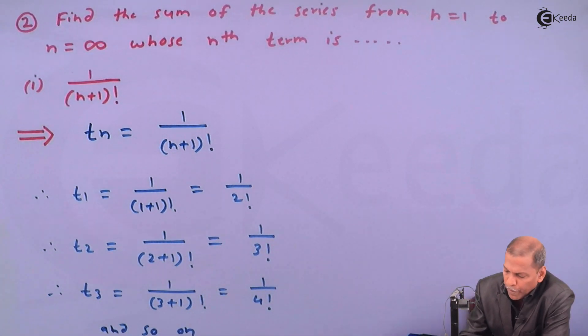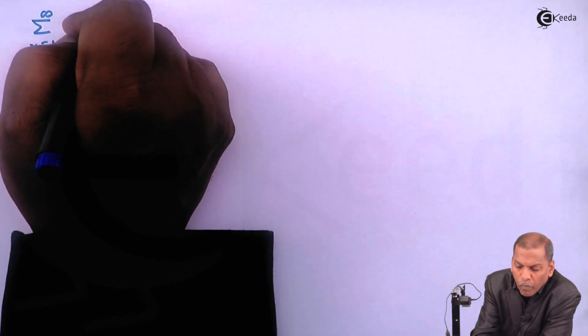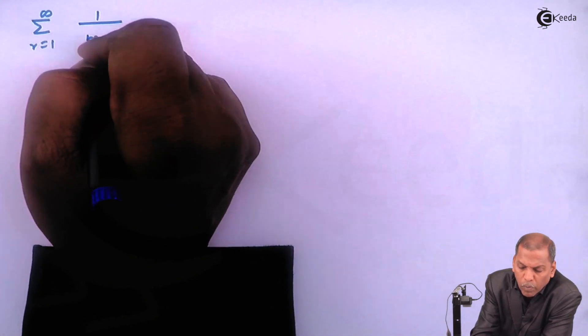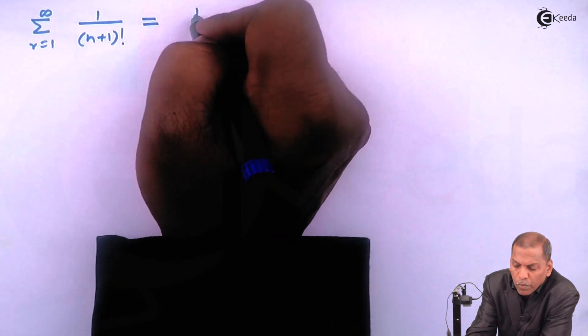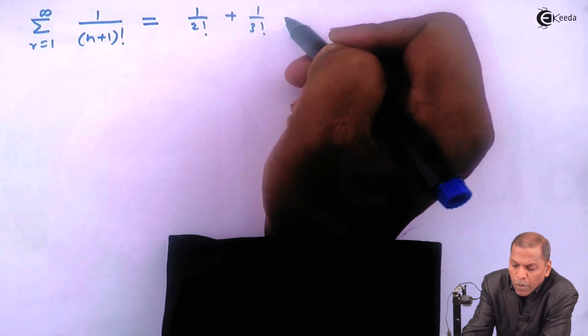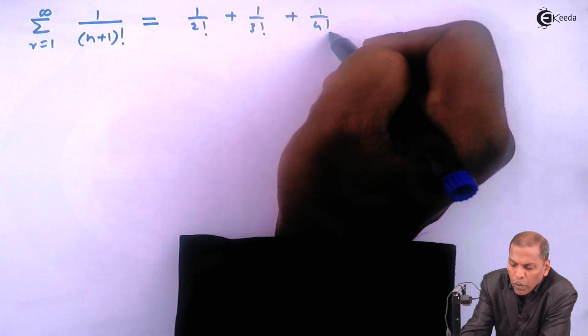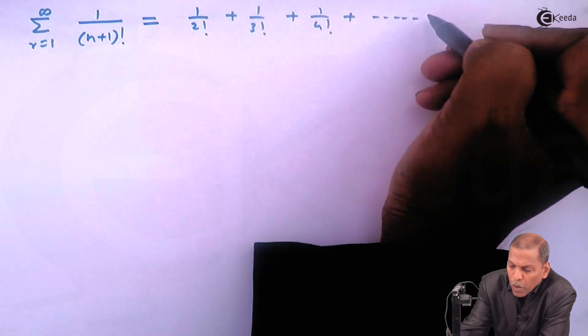So the summation from n equal to one to infinity of one upon (n plus one) factorial equals one upon two factorial plus one upon three factorial plus one upon four factorial, and so on.